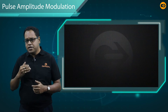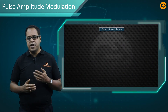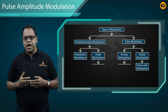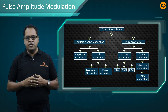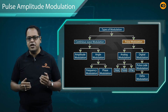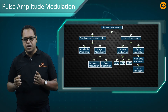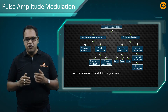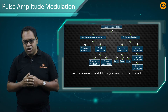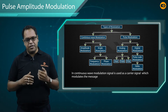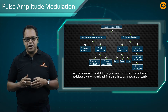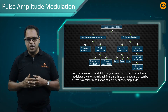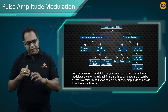Before starting Pulse Amplitude Modulation, let us discuss the modulation types. There are two types of modulation: one is known as Continuous Wave Modulation and another is Pulse Modulation. In Continuous Wave Modulation, a wave modulated signal is used as a carrier signal which modulates the message signal. There are three parameters that can be altered to achieve modulation, namely Frequency, Amplitude, and Phase.